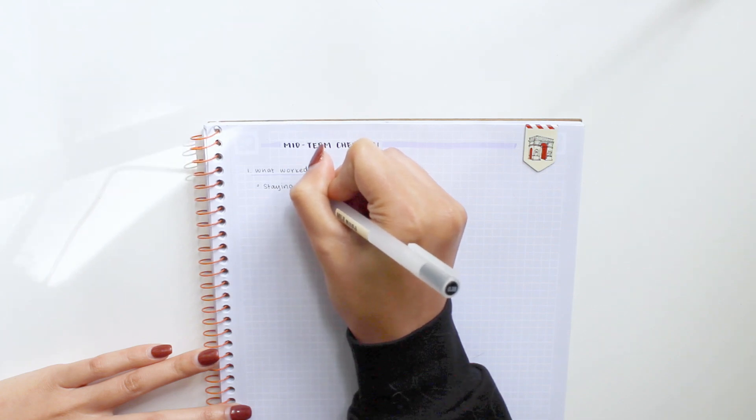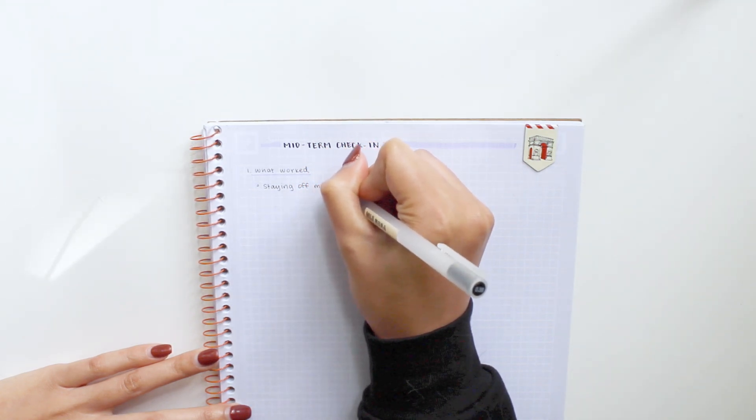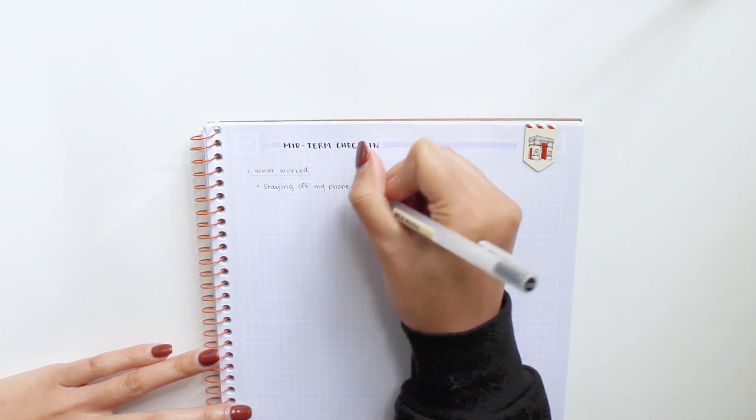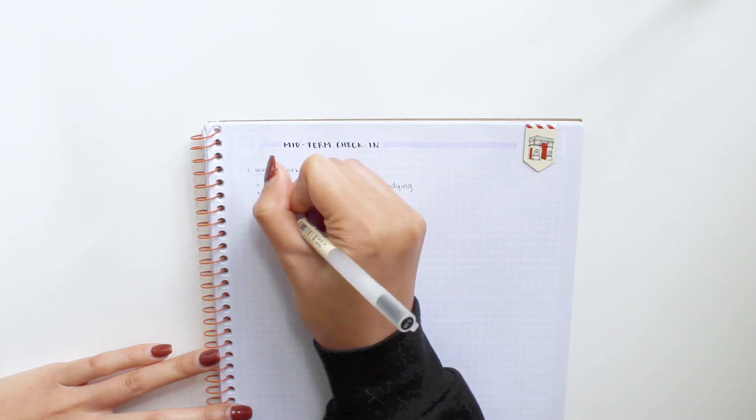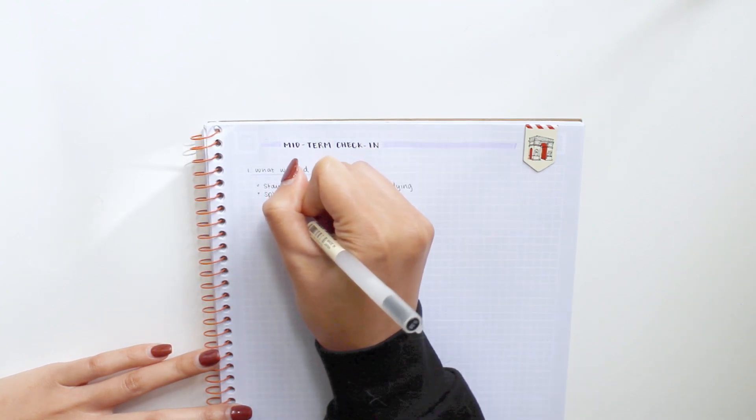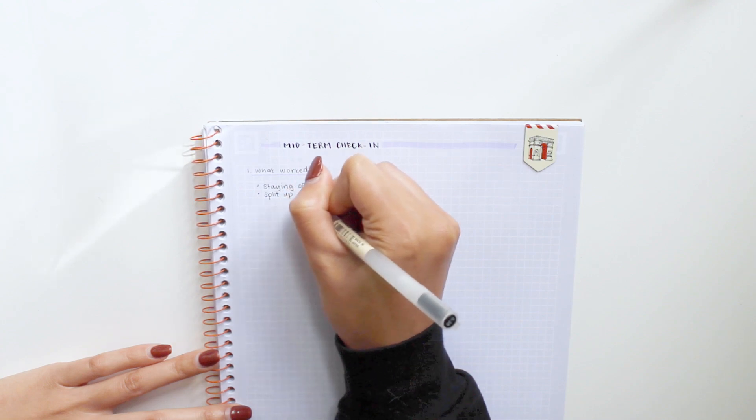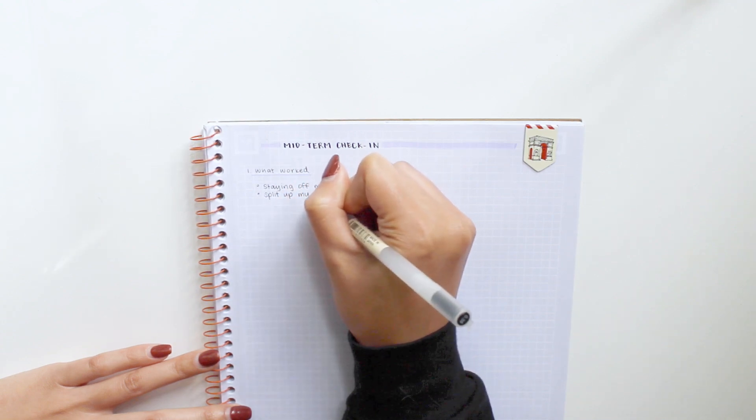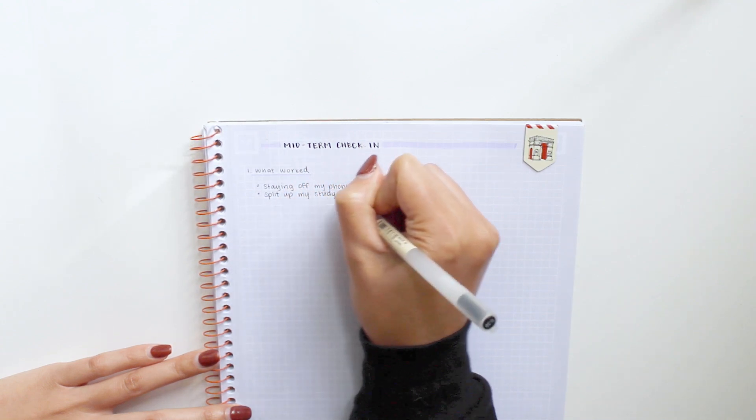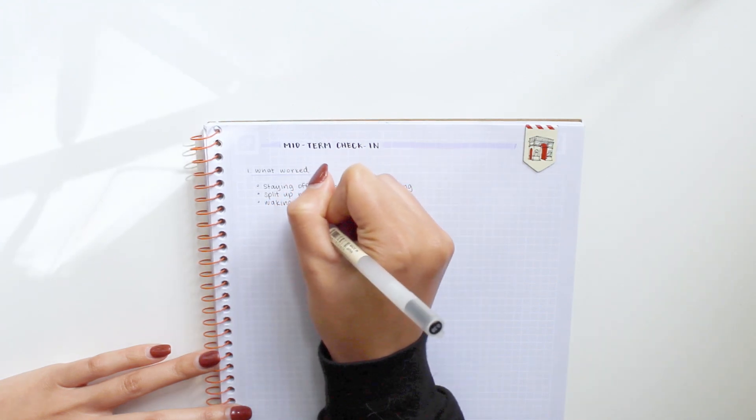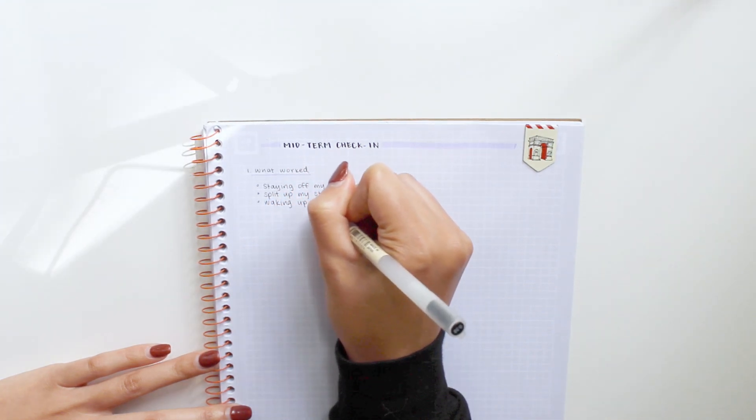So what worked for me throughout this semester was definitely staying off my phone, and this allowed me to give my undivided attention to doing homework. Also, splitting up my study material between the days that I plan to study made studying seem more doable and really helped me on my exams. And lastly, waking up early allowed me to have some time for myself instead of trying to squeeze in me time throughout the day.